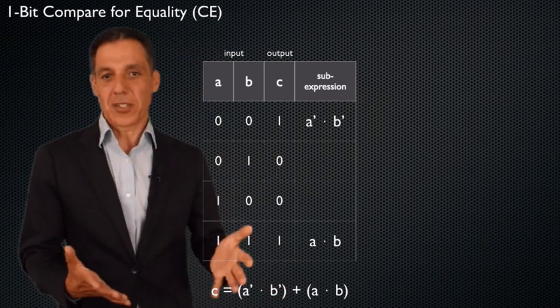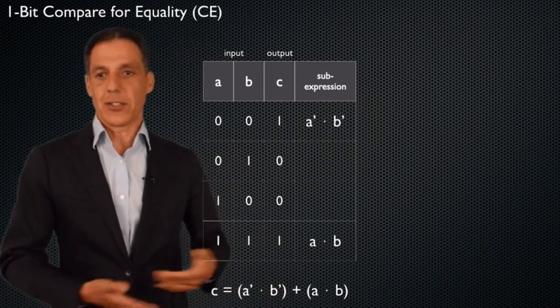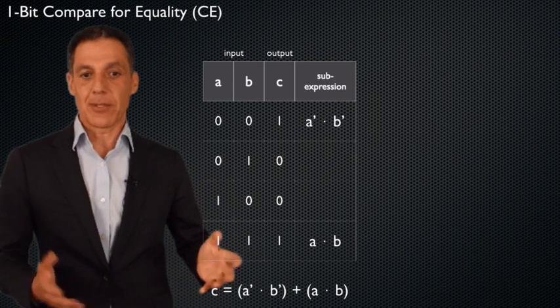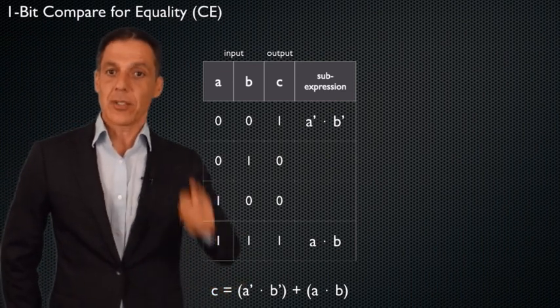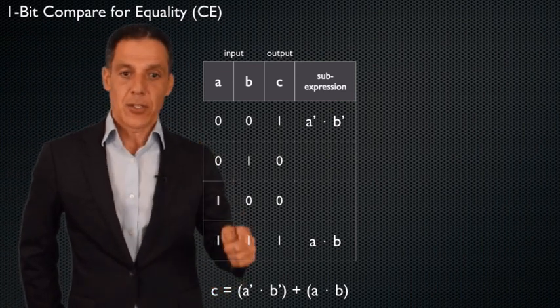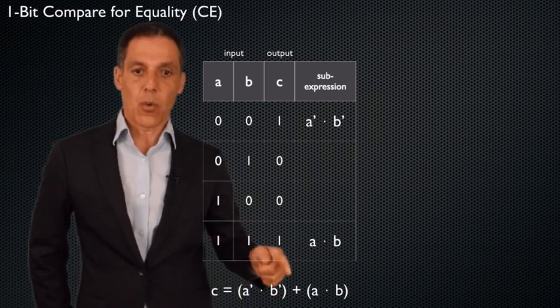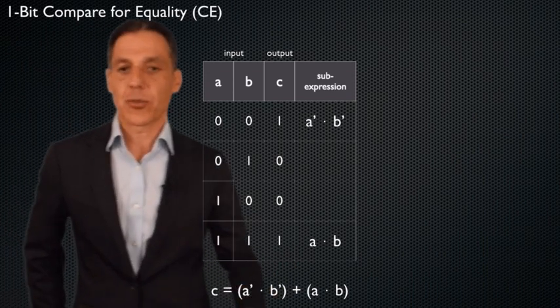So at this point, you're sort of done. Drawing the circuit is just the fun part. It's just to sort of prove the point that you can actually implement this thing. But I've now got a computation, one bit compare for equality, using logical AND, logical OR, and NOT. All right, let's go ahead and just draw the circuit.